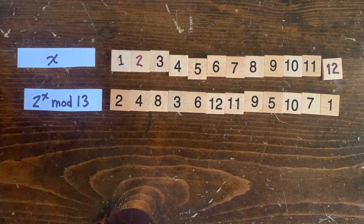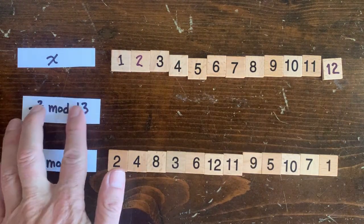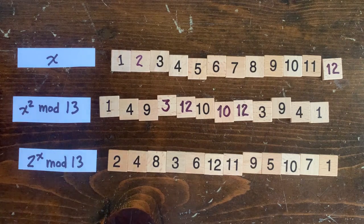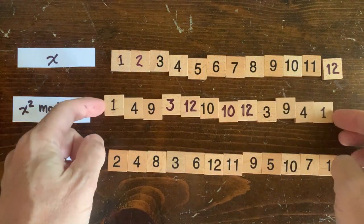Okay, but for this theorem of Fermat's, we want to look at the remainders of x squared when we divide by 13, instead of 2^x. So we get a very different looking pattern now.